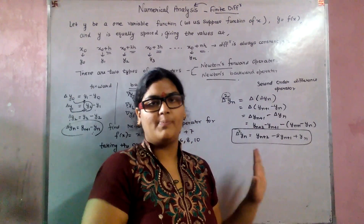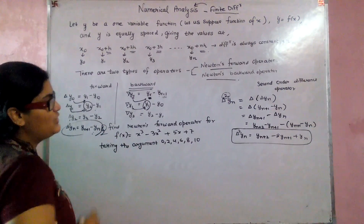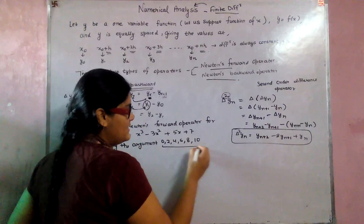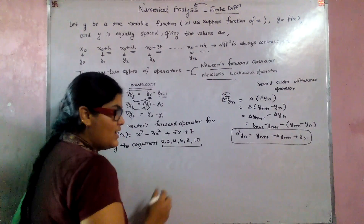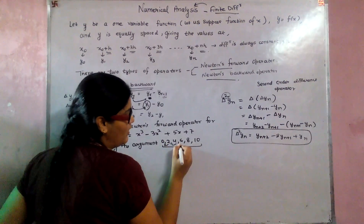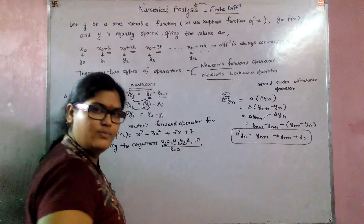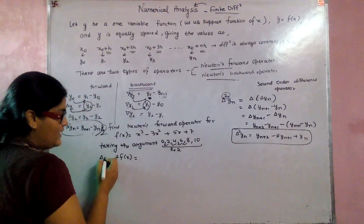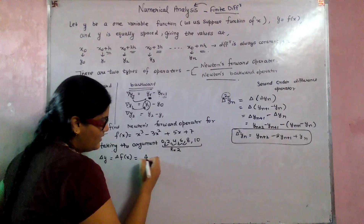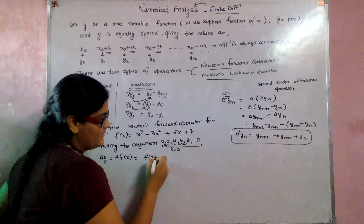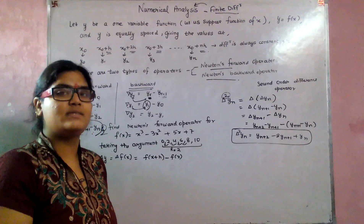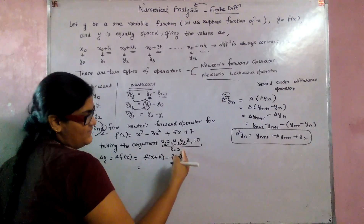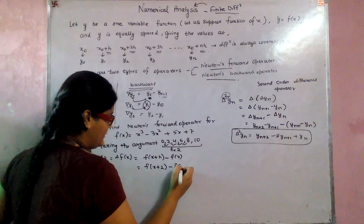Now we have an example to make this topic clearer. Find Newton's forward difference operator for the function f(x) = x³ - 3x² + 5x + 7, with arguments taken at equally spaced intervals where h = 2. The forward difference operator: del f(x) = f(x+h) - f(x), and since h = 2, this becomes f(x+2) - f(x).